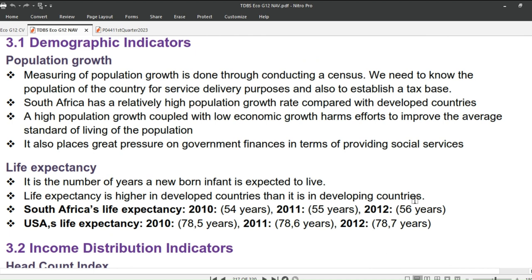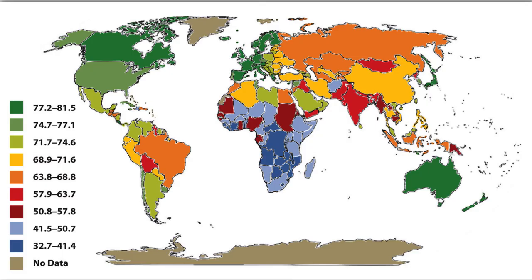Next we will look at life expectancy. It is the number of years a newborn infant is expected to live. Life expectancy is higher in developed countries than it is in developing countries. Looking at a world map on life expectancy, life expectancy is lowest in southern Africa, while it is very high in Canada, Europe, Australia, and New Zealand. A lot of diseases claim lives and there is inadequate infrastructure to fight those diseases.